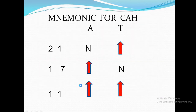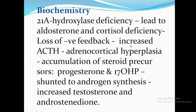ACTH is elevated in classic CAH because of the loss of negative feedback due to deficiency of aldosterone and cortisol. In the non-classical or partial form, some aldosterone and cortisol remain, so ACTH is not hypersecreated. In classic CAH, complete deficiency of aldosterone and cortisol leads to ACTH hypersecretion.